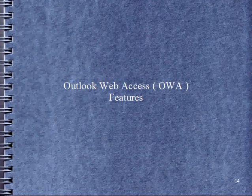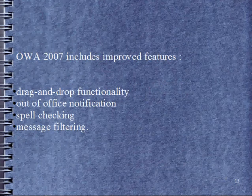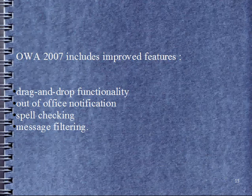Outlook Web Access Features. Outlook Web Access 2007 includes improved features: drag and drop functionality, out-of-office notification, spell checking, and message filtering.